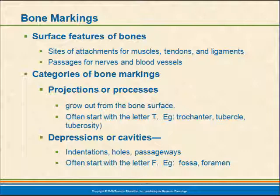We also have depressions, cavities, and holes. These are passageways for materials to go through, like blood vessels or nerves, or they may just be places where a muscle lies and results in a little depression. These often start with the letter F — for example, fossa or foramen.